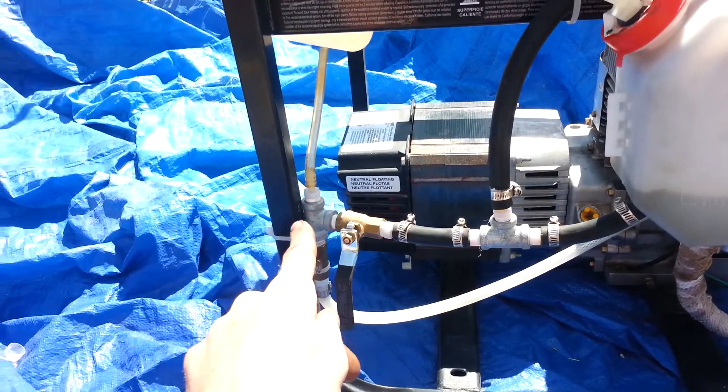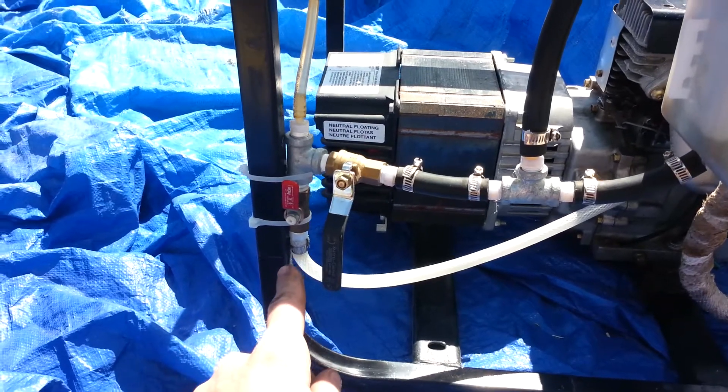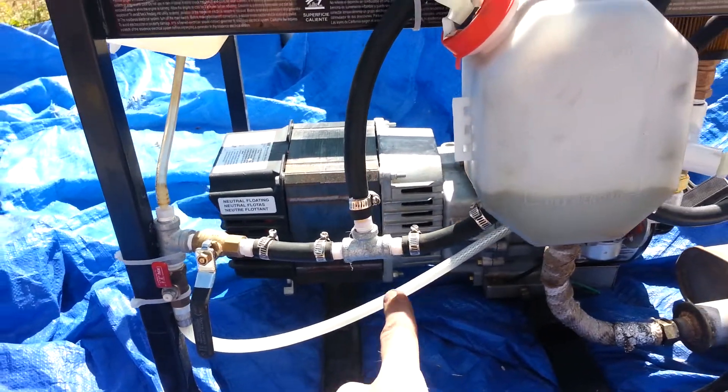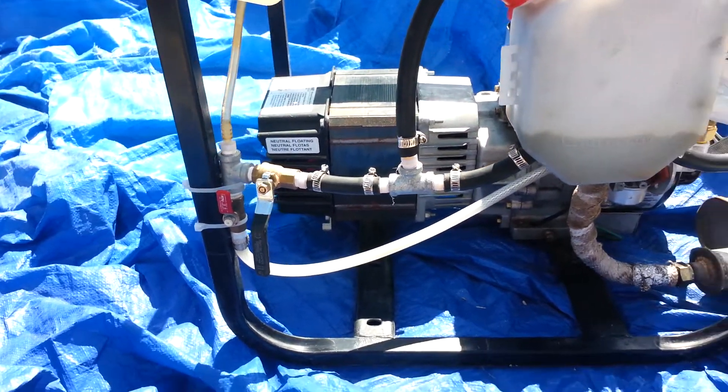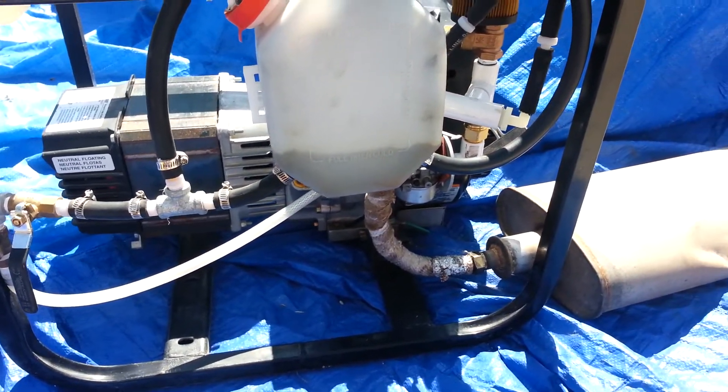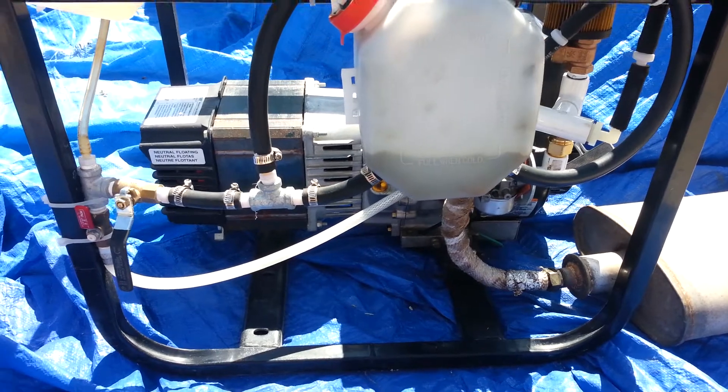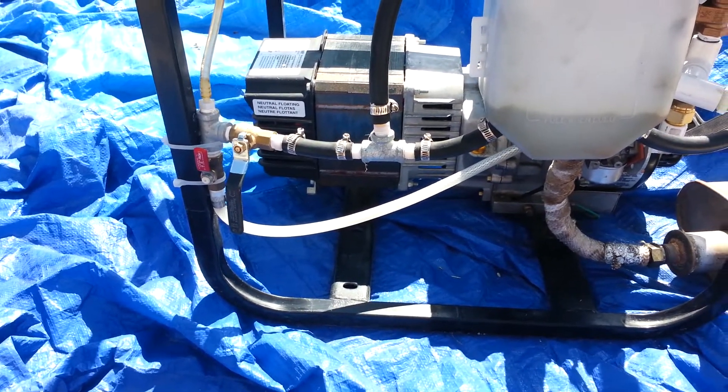And then this other valve here goes down to my carburetor, and as you can see it's open right now. The one to the vaporizer is closed because I was having problems with my generator running normal off the carburetor. Would run just fine off the vaporizer but wouldn't run off the carburetor.